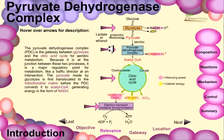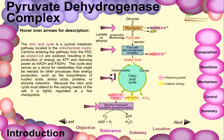The pyruvate dehydrogenase complex is the gateway between glycolysis and the citric acid cycle for aerobic metabolism, because it sits at the junction between the two processes. It is a major regulatory point for metabolism, like a traffic director at an intersection. The pyruvate made by glycolysis is first translocated to the mitochondrial matrix before the PDC converts it into acetyl-CoA, generating energy in the form of NADH.